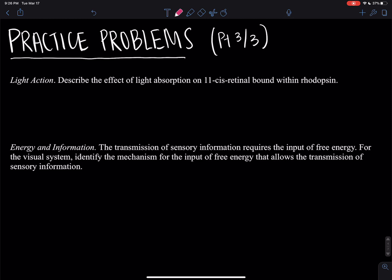For light action, describe the effect of light absorption on 11-cis retinol bound within rhodopsin. When light hits rhodopsin, the 11-cis retinol gets converted to all-trans retinol. This conformation can no longer bind to opsin. Opsin then goes on to bind to transducin to continue the signal transduction.